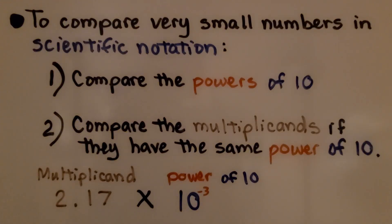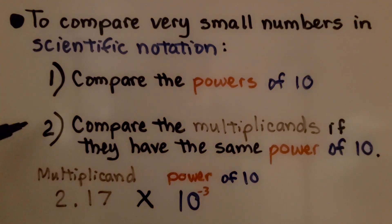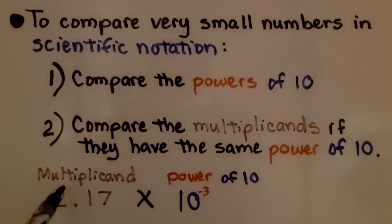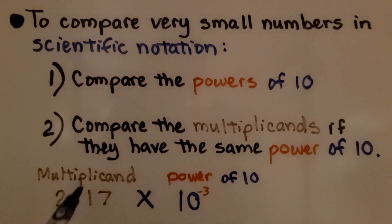To compare very small numbers in scientific notation, the first thing we do is compare the powers of 10. The second thing we do is compare the multiplicands if they have the same power of 10. Remember, the first number in a multiplication equation is the multiplicand, so if they have the same power of 10, then we compare the multiplicands.